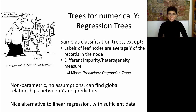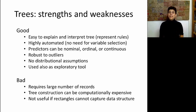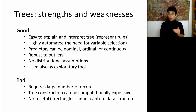You've now expanded your toolkit to include regression trees when you have a numerical outcome. Trees have some very nice features but also some weaknesses. What's nice about trees? They're very easy to explain, and you can easily interpret what the tree means. We can generate logical rules that are easy to explain even to non-experts.